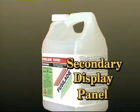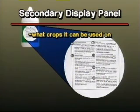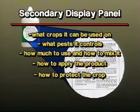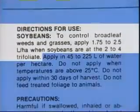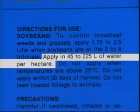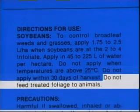Secondary display panel. The back or side panel of a pesticide label is known as the secondary display panel. It is here that you will find the directions for use. This section of the label will contain such information as what crops it can be used on, what pests it controls, how much to use and how to mix it, how to apply the product, how to protect the crop, when you should not use it, and any other restrictions that might apply. This label says that to control broadleaf weeds and grasses, apply 1.75 to 2.5 liters per hectare when soybeans are at the 2 to 4 trifoliate stage. Apply in 45 to 225 liters of water per hectare. Do not apply when temperatures are above 25 degrees centigrade, do not apply within 30 days of harvest, and do not feed treated foliage to animals.